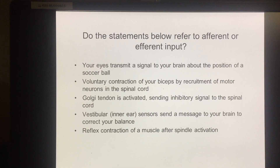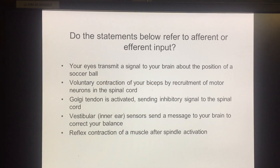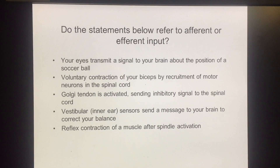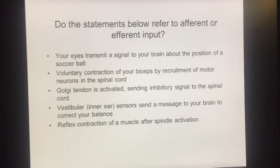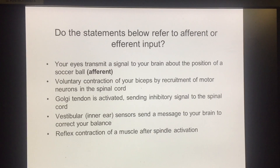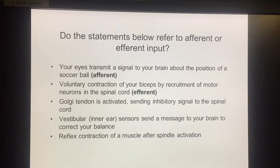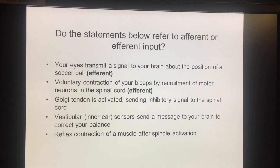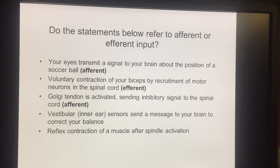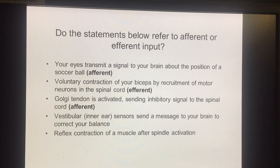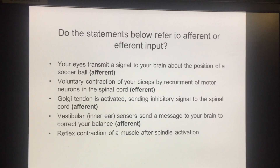This question has to do with efferent versus afferent input. Afferent means going back to the central nervous system from your receptors; efferent means going from the central nervous system to your muscles. First example: your eyes transmit a signal to your brain about the position of a soccer ball — that would be afferent, going from receptor back to the central nervous system. Second: voluntary contraction of your biceps by recruitment of motor neurons in the spinal cord — that would be efferent. Third: Golgi tendon organ activated, sending an inhibitory signal to the spinal cord — this would be afferent. Fourth: vestibular sensors in your ear send a message to your brain to correct your balance — vestibular receptors are important for balance maintenance, and this is going from receptor to central nervous system, so afferent.